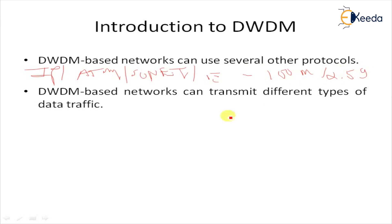DWDM networks can transmit different types of data traffic at different speeds over separate laser channels. From a quality of service perspective, DWDM networks can quickly respond to customer bandwidth needs and protocol changes in a cost-effective manner.